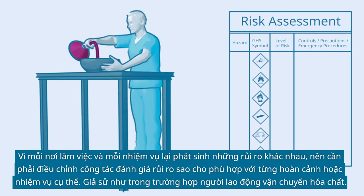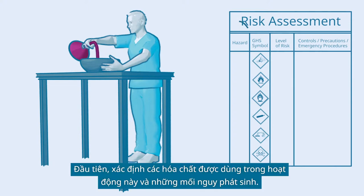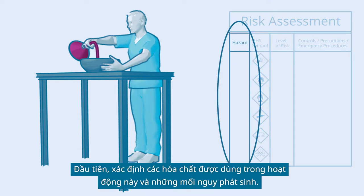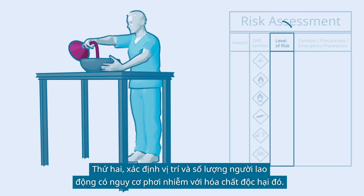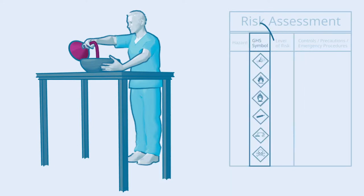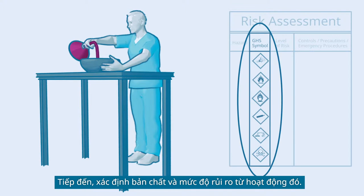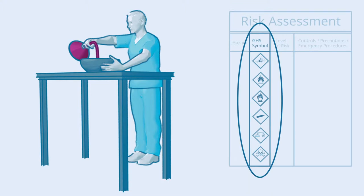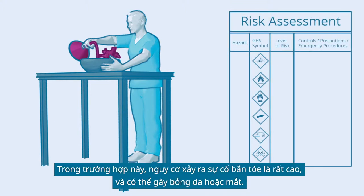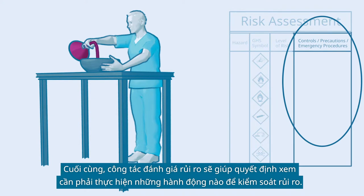For example, here when a worker transfers a chemical: first, identify the chemical substances used in this activity and their hazards. Second, locate which and how many workers are possibly at risk of exposure to that hazardous chemical. Next, identify the nature and level of risk of that activity. In this case, there is a high risk of splashing, which may cause skin or eye burns. Finally, the risk assessment helps to decide what actions to take for controlling the risk.